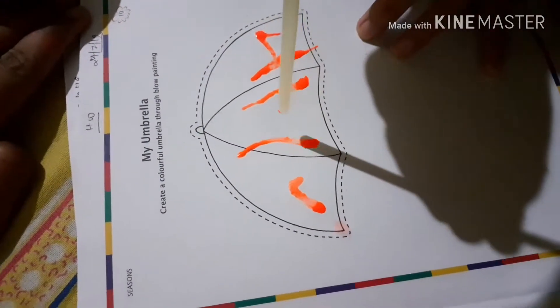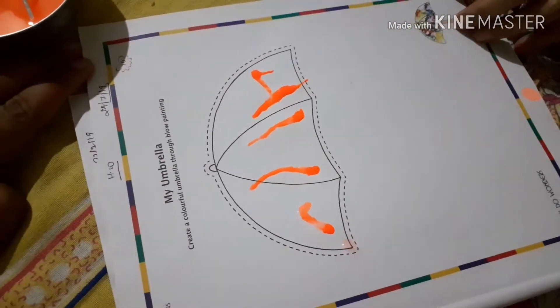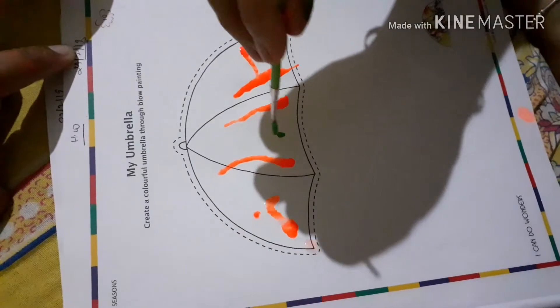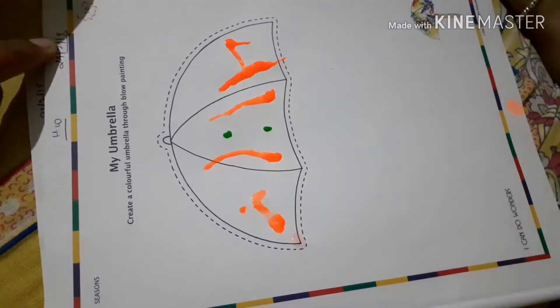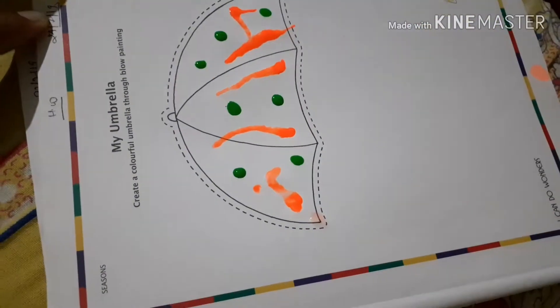After that you have to make drops of other colors also to make it colorful. Now only one color dots are made. Now you can make other color dots also to make it more colorful.